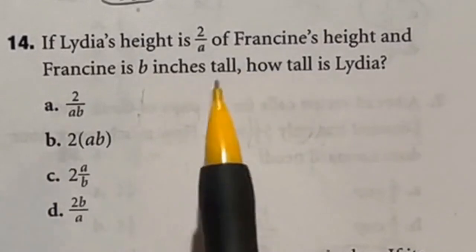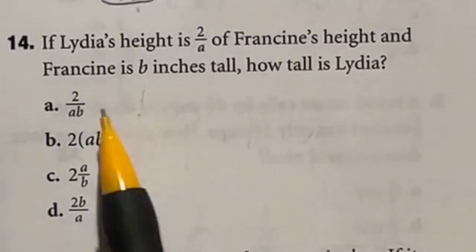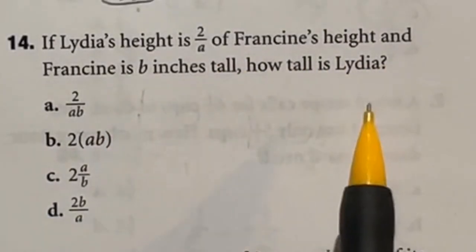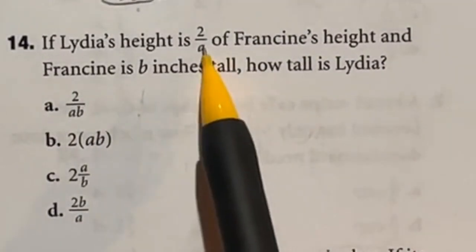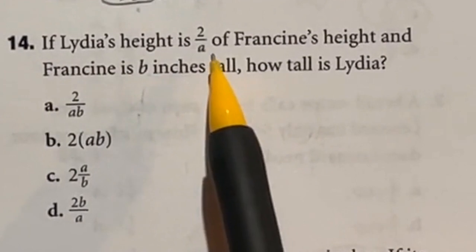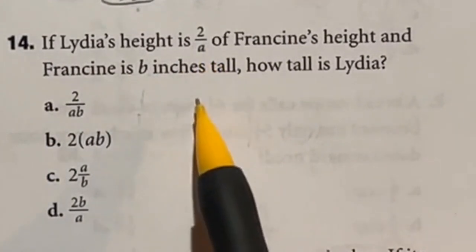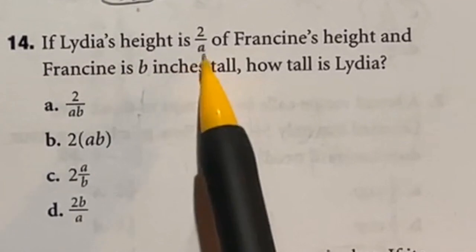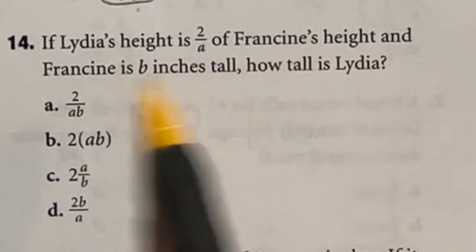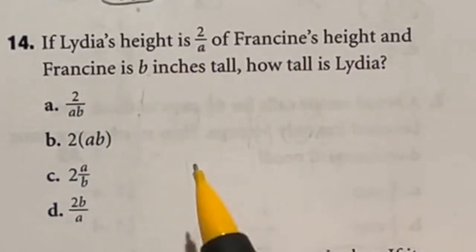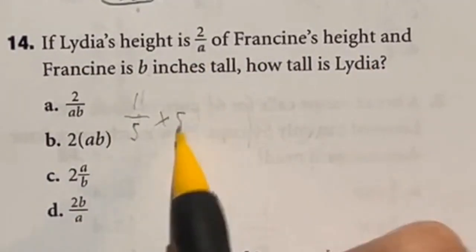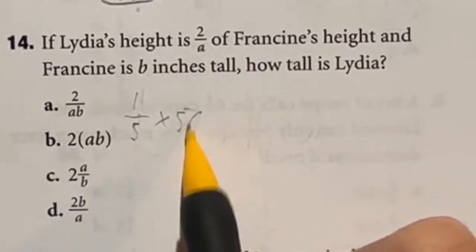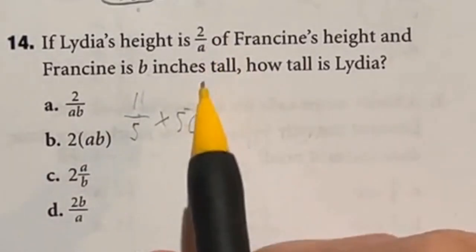So Lydia's height is 2 over a of Francine's height and Francine is b inches tall. How tall is Lydia? At first glance this seems to be very confusing. When you get super confused with extra variables just try plugging in a regular number or fraction and see if that makes things easier. If I said Lydia's height is one fifth of Francine's height and Francine was 50 inches tall then I would just do one over five times that 50 to see what one fifth of 50 was. So we can do that same thing here.